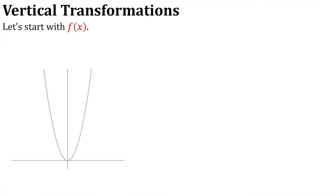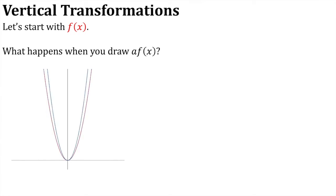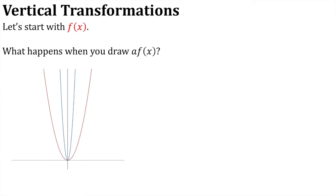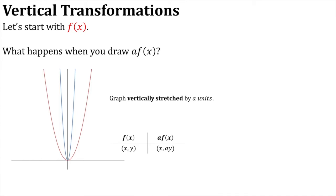Starting with the graph of f of x — what happens when we draw a multiplied by f of x, i.e. a·f(x)? The graph almost appears to be getting thinner. What is actually happening is it has been vertically stretched by a units — each of the y-coordinates is being multiplied by a. So if we had the point (x, y) on f of x, that same point becomes (x, ay) on the graph of a·f(x).